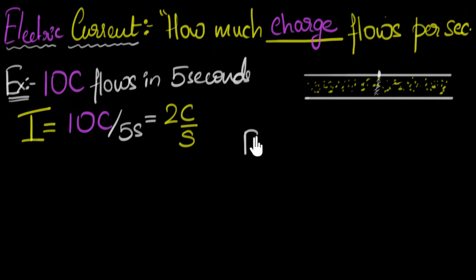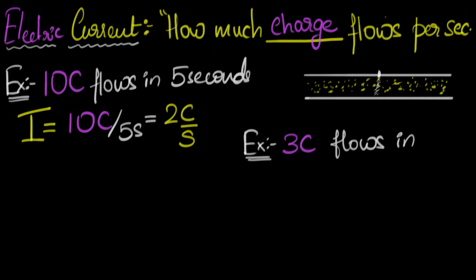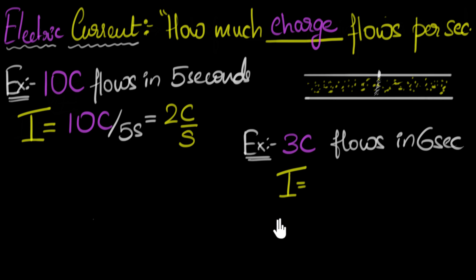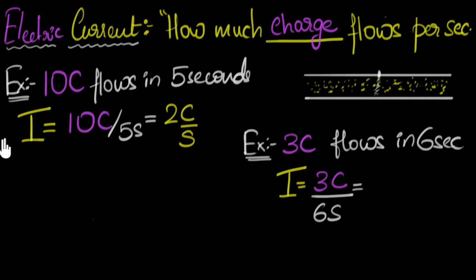Let's take another example. Say you take a different wire with a different current, and you find out three coulombs flow in six seconds. Can you calculate what the current is? Pause the video and try this yourself first. The current I is going to be three coulombs per six seconds. Three divided by six is one half, so the current is 0.5 coulombs per second. And that's how you calculate current.